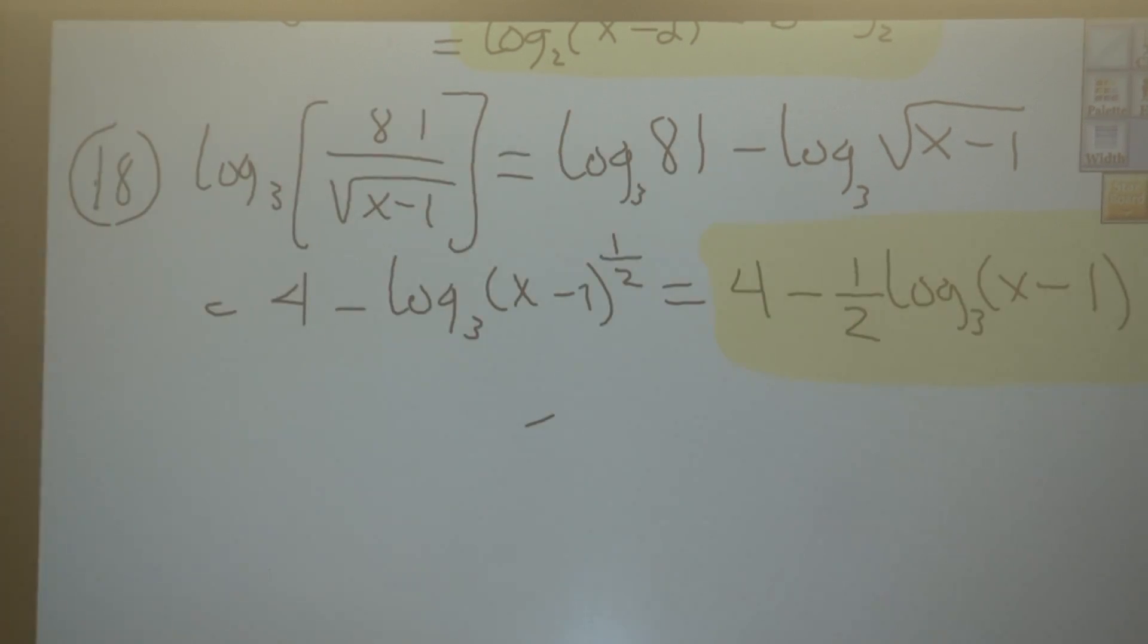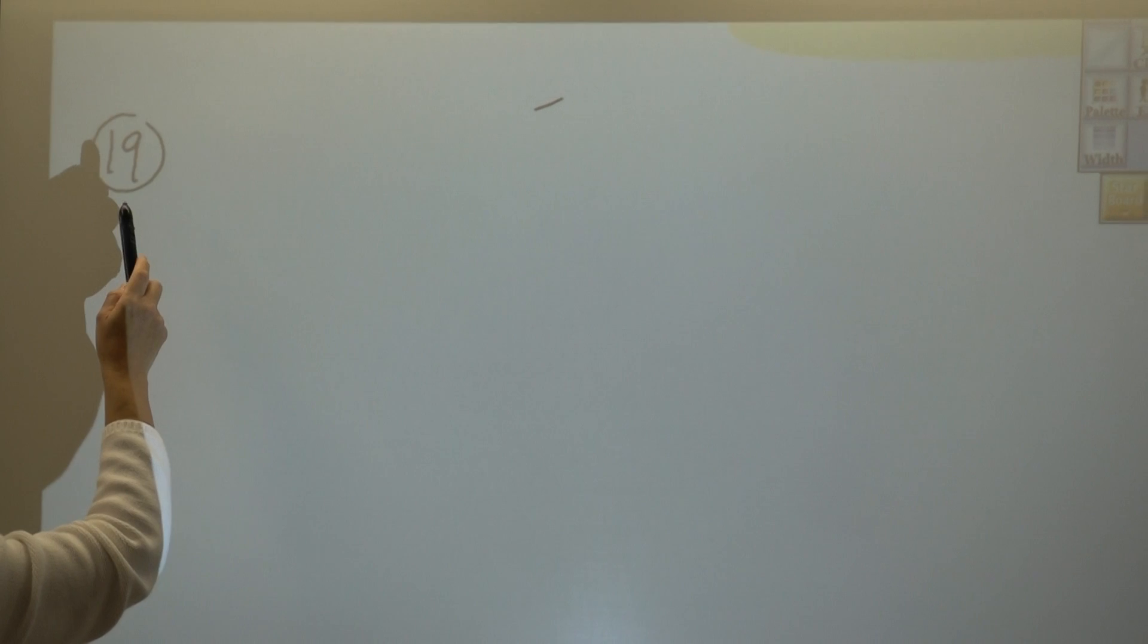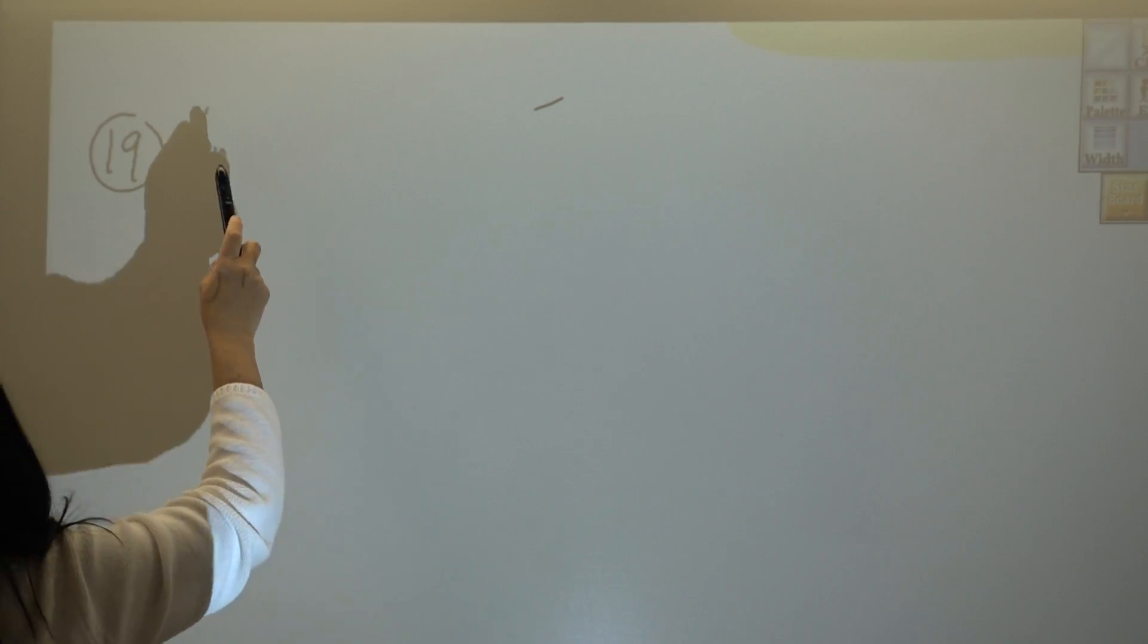We're going to continue with problem number 19. This is another expanding problem, but this is actually very simple. Number 20 is natural log of square root of x over y.